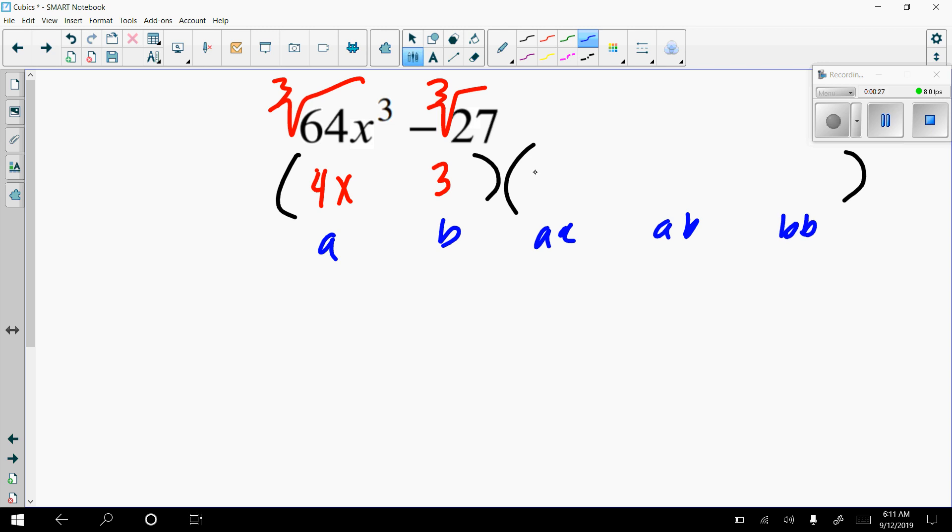So a times a is 4x times 4x, so that's 16x squared. A times b is 4x times 3, so that's 12x, and b times b is 9.